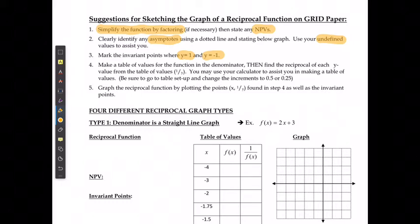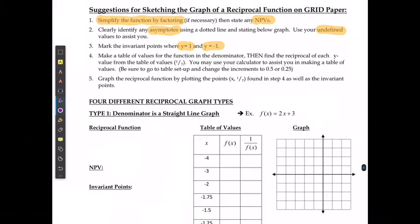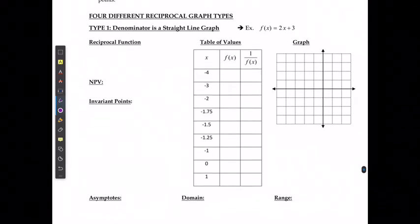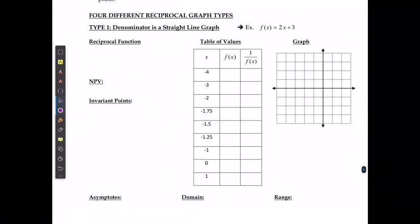Then I'm going to use a table of values for what the original function was to find what the reciprocal functions are so that I can try and graph it out as clearly as possible. So let's take a look at this. If I have the function 2x plus 3, the reciprocal of this function is going to be y is equal to 1 over 2x plus 3.